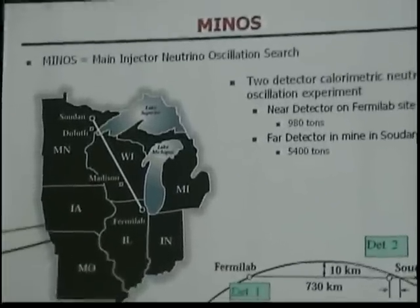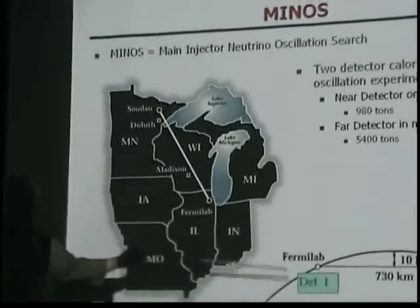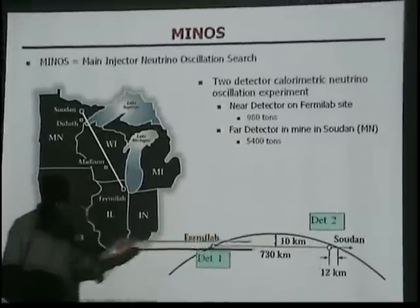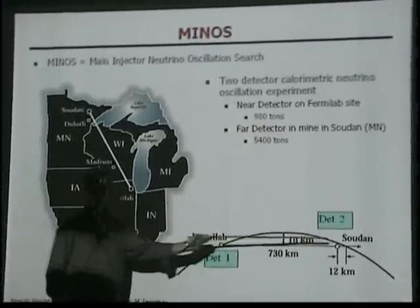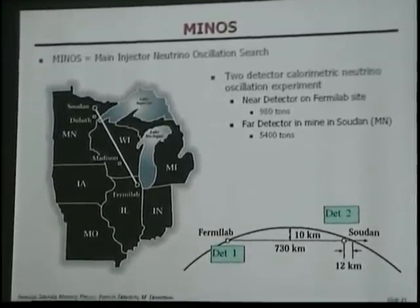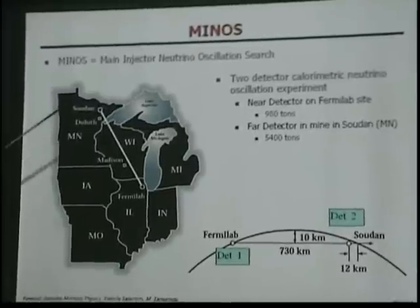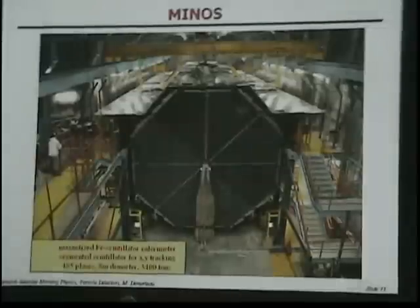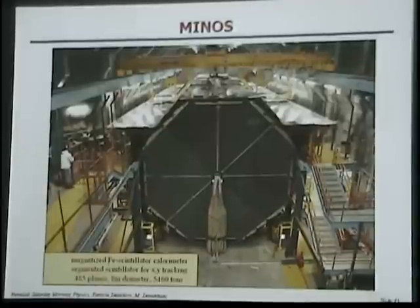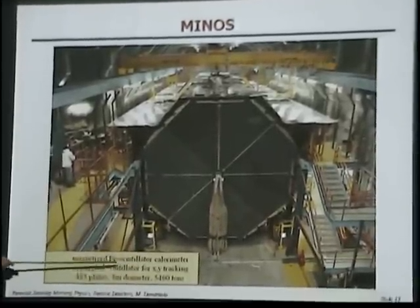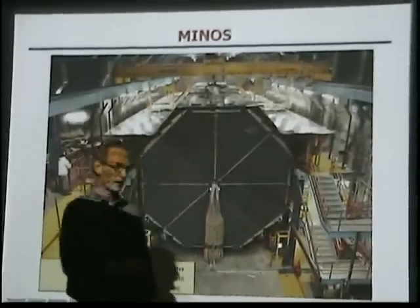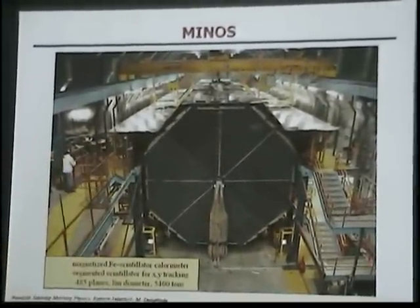We also send neutrinos to Minnesota. We have a beam line here that actually dives underground because of the curvature of the earth, so we want them to come out close to the Canadian border. We send these neutrinos to the Sudan mine in northern Minnesota, where we look for neutrino interactions. That detector is a calorimetric detector — an iron scintillator calorimeter with scintillators and photomultiplier groups where you look for neutrino interactions.